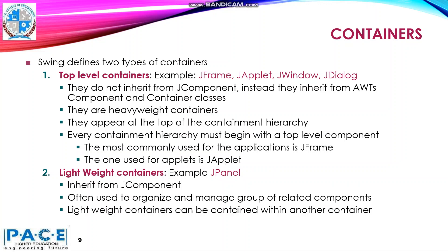Swing defines two types of containers. One is top-level containers and the other is lightweight containers. Examples of top-level containers are JFrame, JApplet, JWindow, and JDialog. These top-level containers do not inherit from JComponent. Instead, they inherit from AWT's component and container classes, so they are heavyweight containers. They appear at the top of the containment hierarchy. Every component hierarchy must begin with a top-level component. The most commonly used for Java applications is JFrame, and the one used for Java applets is JApplet.